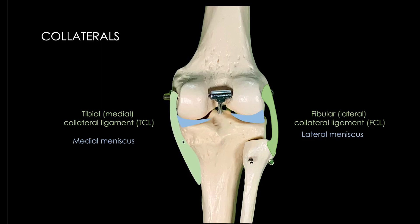Medially, there is no space between the medial meniscus and the medial collateral ligament, but laterally there is a space. This space is important because it transmits the tendon of the popliteus muscle. The popliteus muscle has a key role to play in unlocking the knee. When the knee is hyperextended it is locked, and to go from this locked position into flexion, the popliteus must bring the knee out of hyperextension. Once this unlocking is performed by the popliteus muscle, the knee can go into the flexion format.